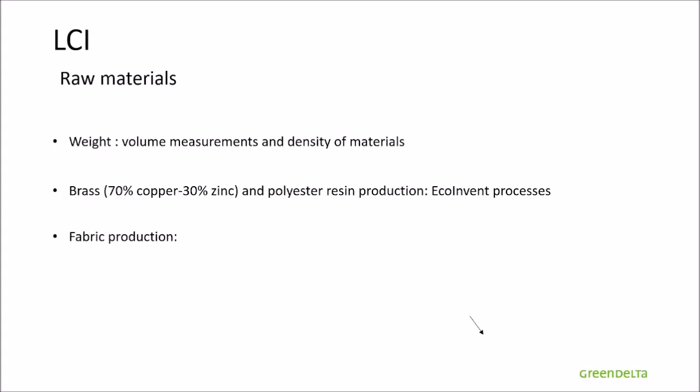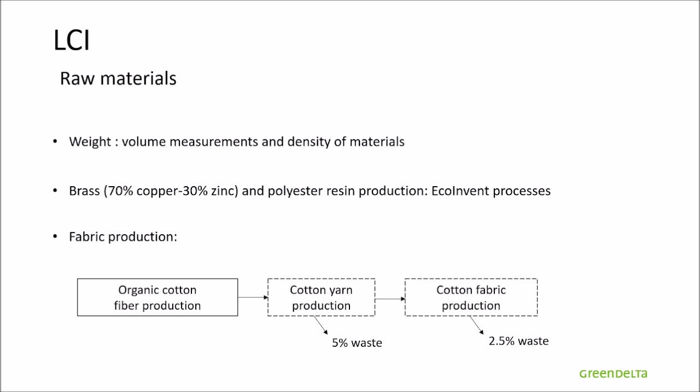Now let's take a look at the life cycle inventory. For the raw materials, the input weight of the components was calculated from volume measurements and the density of materials. For the brass and for the polyester resin production, generic processes were taken directly from ECOINVENT. However, for the fabric production, some ECOINVENT processes were adapted to the case. The organic cotton fibers production was taken as such from ECOINVENT, but from the following stage it was adapted to fit organic cotton, with waste estimated to be 5% of the yarn. For the cotton fabric production, it was also modified for organic cotton, and around 2.5% of the fabric is disposed of.